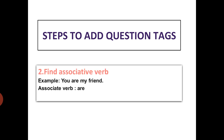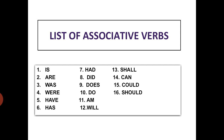Step number two: find the associative verb. The associative verb is also called a helping verb. In the example 'You are my friend,' the associative verb is 'are.' There is a list of associative verbs displayed on the screen: is, are, was, were, have, has, had, did, does, do, am, will, shall, can, could, should. We need to use a suitable associative verb from this list while adding question tags.